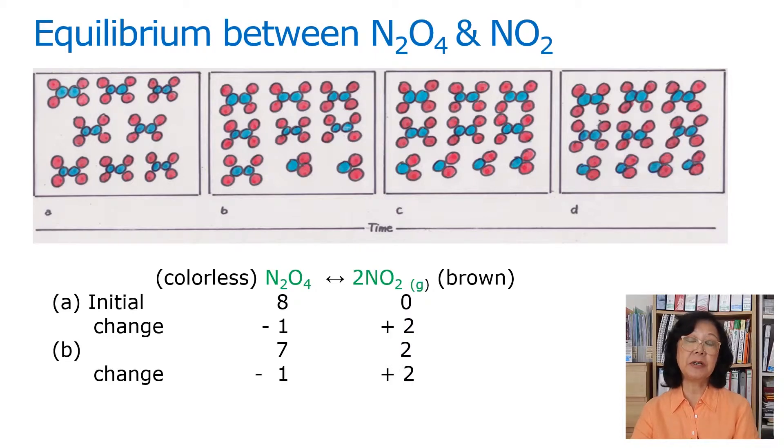As time goes on, another one molecule of N2O4 is converted into two molecules of NO2. We have six N2O4 versus four NO2 as depicted by diagram C.